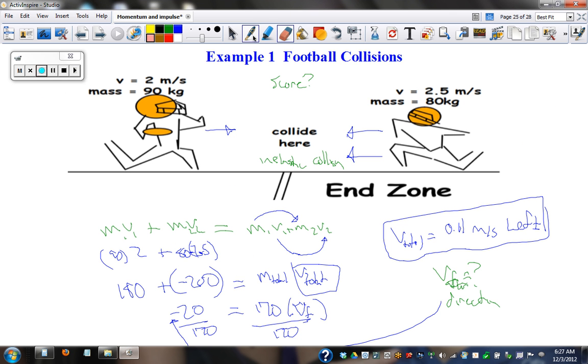Alright, little recording error. Not sure where I cut off. But we find the mass and velocity before. This guy has a momentum of 180. This one has a momentum of negative 200 because he's running the opposite way. So our total is negative 20. We combine the masses because they're going to stick together, which means we'll just have one final velocity. So mass total times velocity total: 170 times VF, divided over. Our total is 0.11 meters per second to the left.